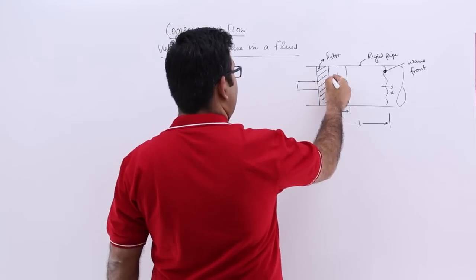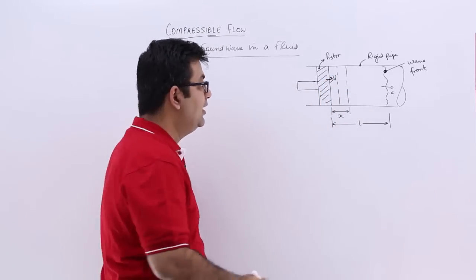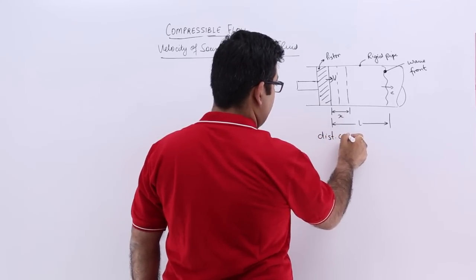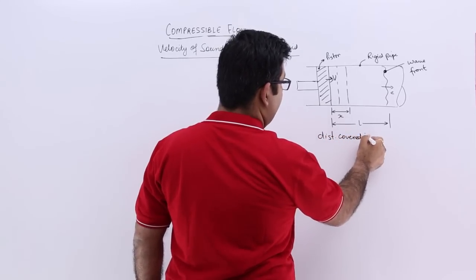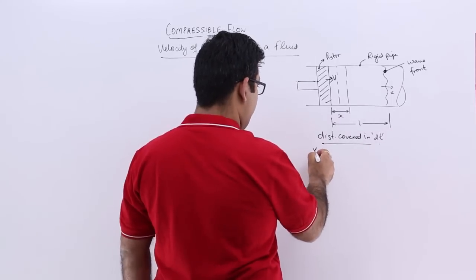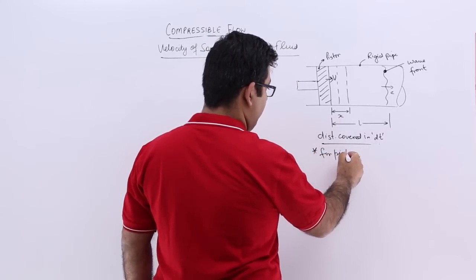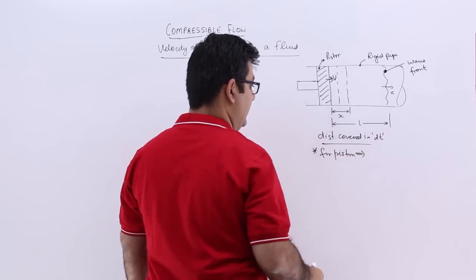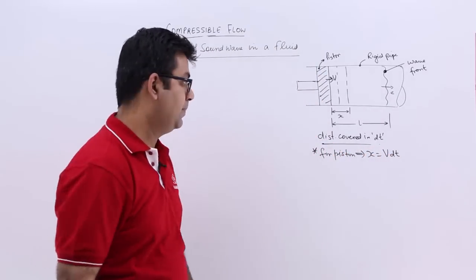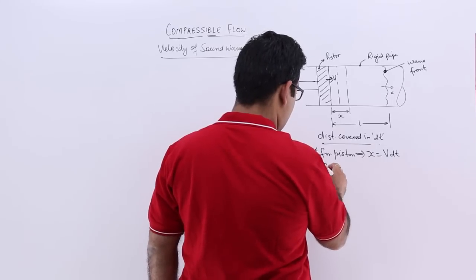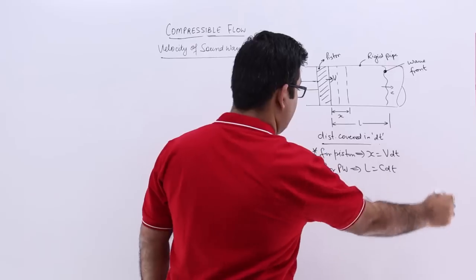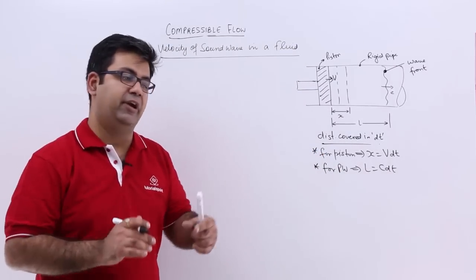The piston is now moving with velocity v. For the distance covered in a small time interval dt: for the piston, x is equal to v times dt — speed into time — and for the pressure wave, L is equal to c times dt. So these are the distances covered in the small interval dt.